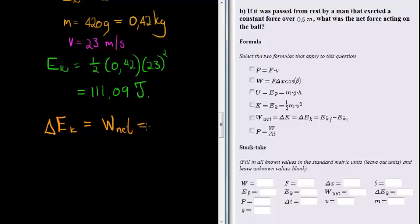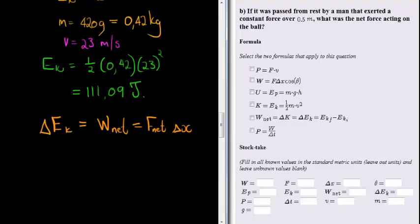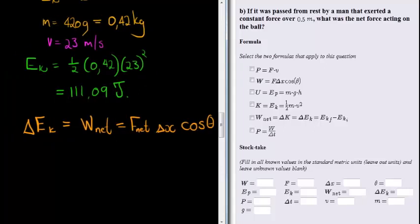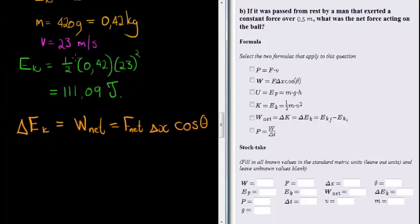And the net work is simply the net force times the change in displacement, times cosine of the angle between them. But the angle between them will just be zero. So what do we have? Well, we have all of this.